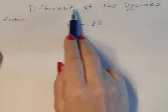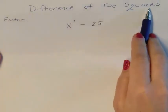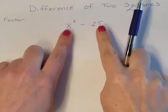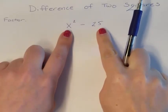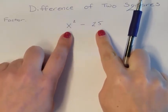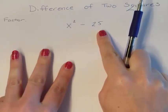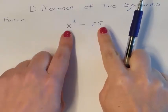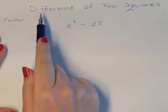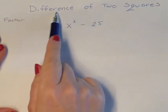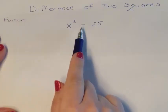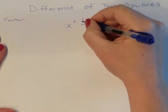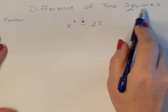So now we need to look at the difference of two squares. We're still factoring, but right now we need to look at: can we factor if there's two terms? We've learned three terms, we've learned four terms. Is there a way to factor two terms? And if you see that it's a difference, meaning that it's a subtraction sign, and you see that you have two squares.